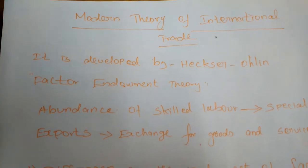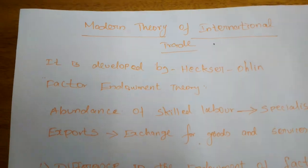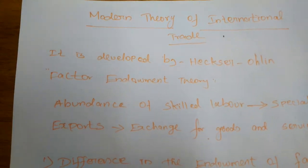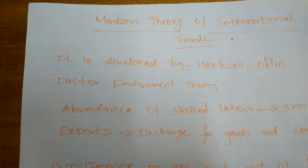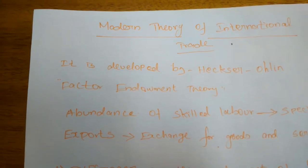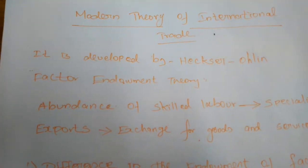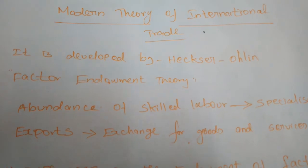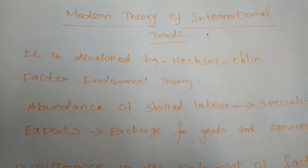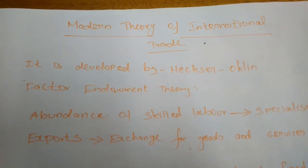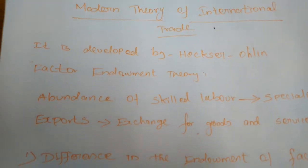Today we will study one of the modern theories of international trade. The modern theory of international trade was developed by Swedish economist Eli Heckscher and his student Bertil Ohlin. This model is based on the regarding theory of international trade.